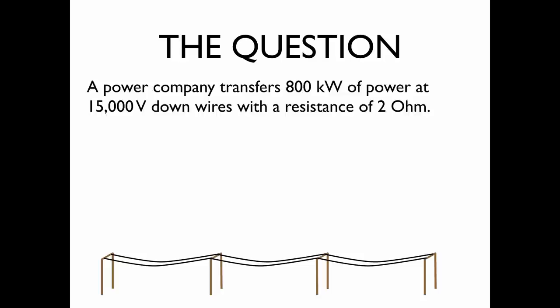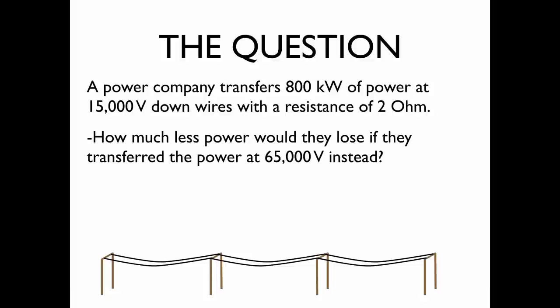A power company transfers 800 kilowatts of power at 15,000 volts down wires with a total resistance of 2 ohms. We'd like to know how much less power would they lose if they transferred the power at 65,000 volts instead.